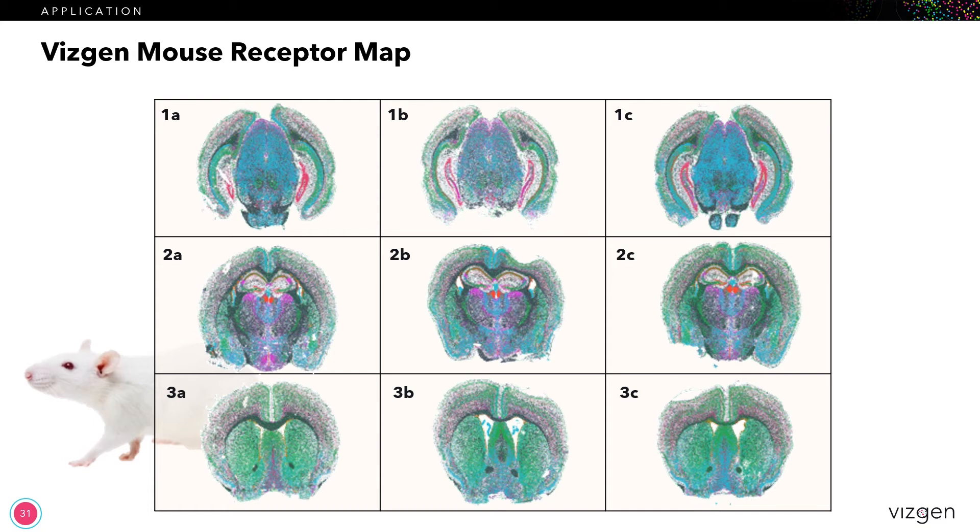So we took the mouse brain, and we took three different coronal sections of a mouse brain, and took replicates from multiple mice, so that we had three replicates of three sections totaling nine sections.